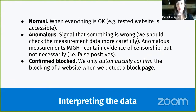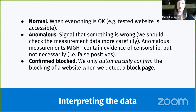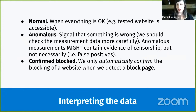When interpreting OONI data, there are three key things to keep in mind. An OONI Probe test result can be one of three things: it can be 'normal,' meaning the tested service appears accessible based on OONI's methodology; it can be 'anomalous,' which is a signal that something is wrong — a signal of potential censorship. We say 'signal' rather than 'confirmed' because we don't have a way of automatically confirming all these forms of censorship.